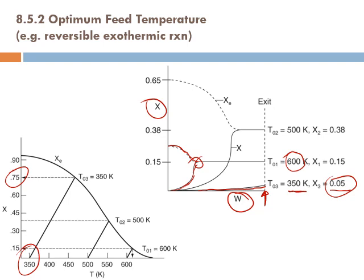Very high feed temperature is also bad — we're now limited thermodynamically. At T₀ = 350 K the conversion was limited kinetically because the rate was low. At T₀ = 600 K, the achieved conversion is still only 15%, but this 15% is limited thermodynamically because the adiabatic equilibrium conversion is only 15% when operating at 600 K feed temperature.